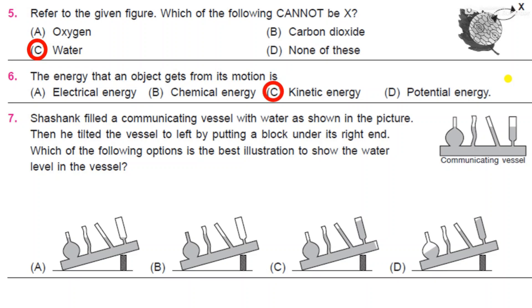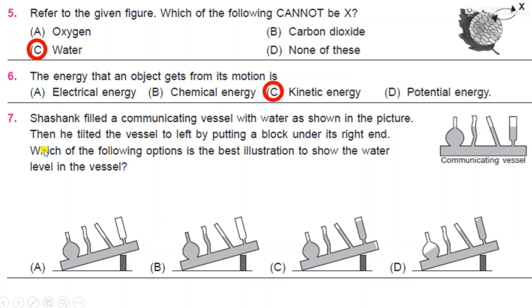Number seven: Shashank filled a communicating vessel with water as shown in the picture. Please refer this picture. Then he tilted the vessel to the left by putting a block under its right end. This is the right end. Which of the following options is the best illustration to show the water level in the vessel? So the block is kept at the right end. Identify the figures from the given option, and the correct figure is A.